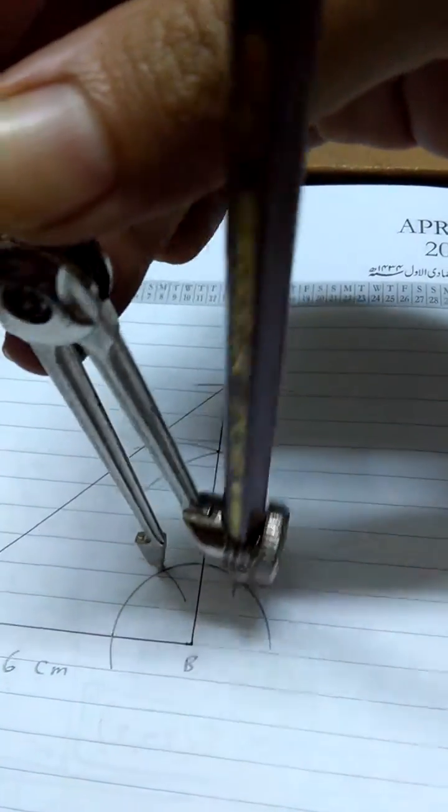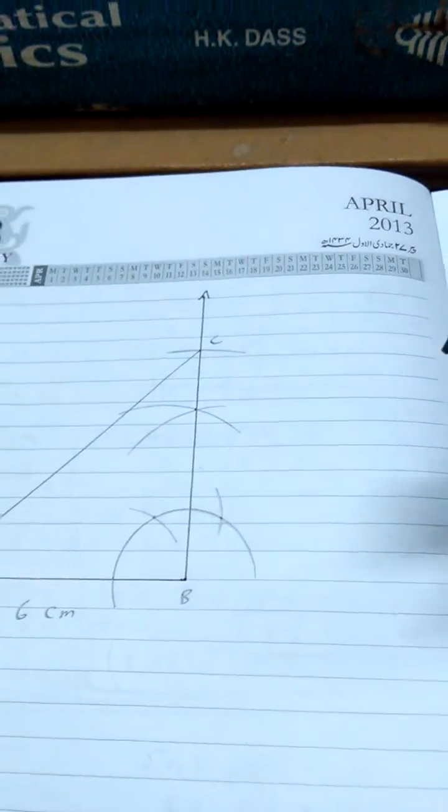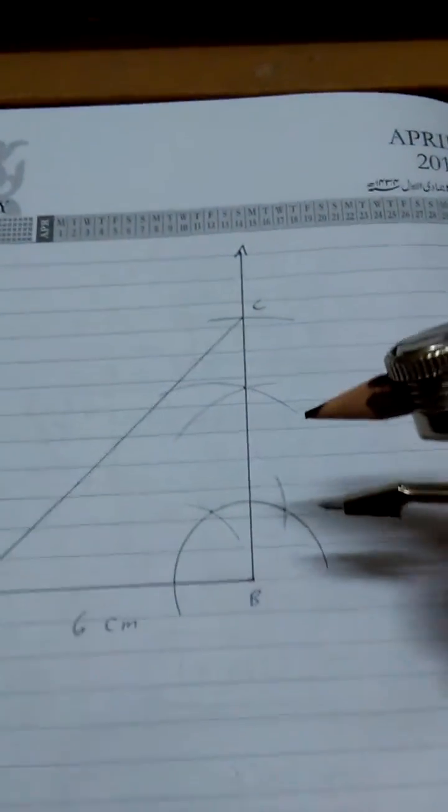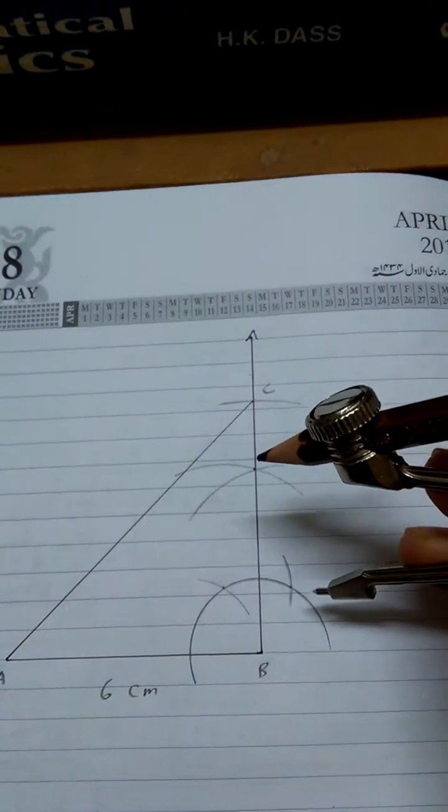You get another point of intersection. Once these two points are obtained, now you are free to change the radius of your compass.